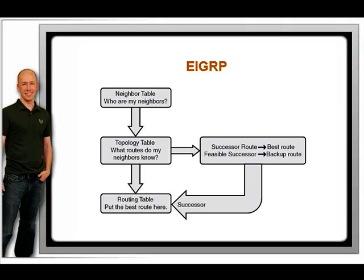EIGRP maintains separate tables for each of the three protocols it supports. Another distinction of EIGRP is its use of two administrative distance values. EIGRP uses administrative distance 90 for routes learned through EIGRP. Routes can also be redistributed into EIGRP from another routing protocol; when this occurs, redistributed routes get an administrative distance of 170. Internal routes are best described as those that are most trusted, whereas external routes are like hearsay and are therefore trusted less.